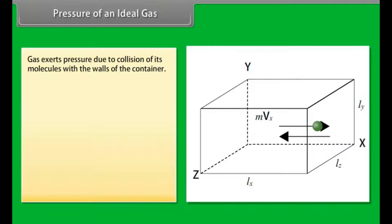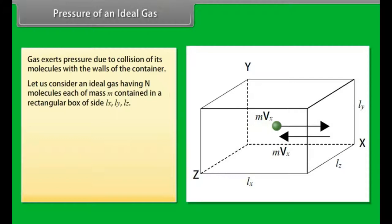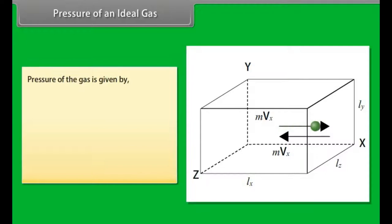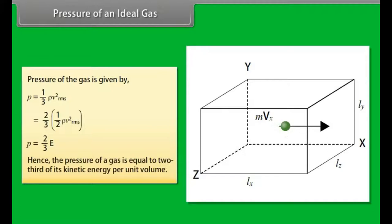Gas exerts pressure due to collision of its molecules with the walls of the container. Let us consider an ideal gas having N molecules each of mass M contained in a rectangular box of sides Lx, Ly, Lz. Kinetic energy per unit volume is given by E equals half ρ V²rms. Pressure of the gas is given by P equals 2/3 E. Hence, the pressure of a gas is equal to two-thirds of its kinetic energy per unit volume.